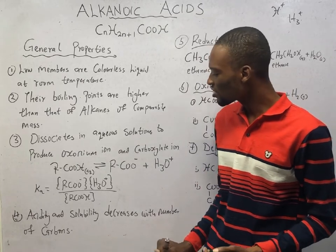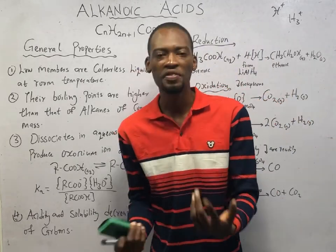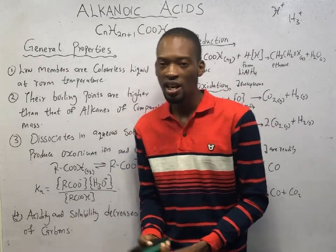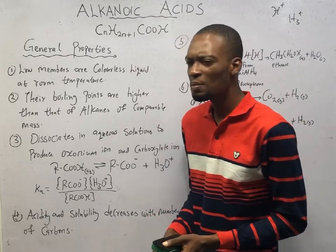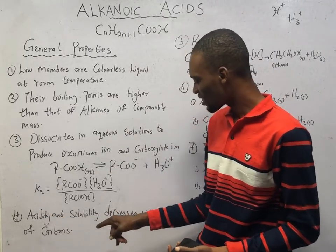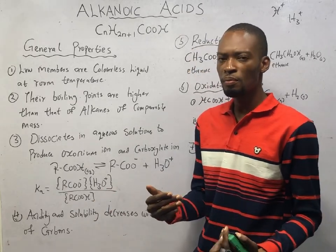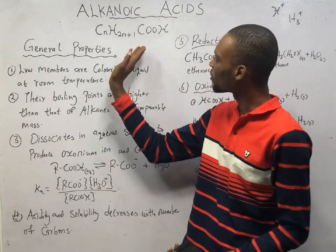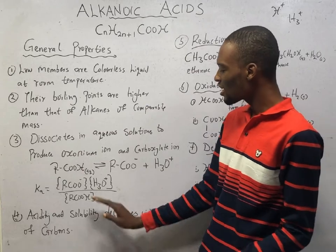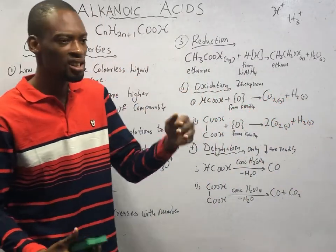Acidity and solubility decrease with increasing number of carbons. This means methanoic acid will be more acidic and more soluble than butanoic acid. As the number of carbons in the alkyl group increases, the acidity and solubility of alkanoic acids will begin to drop.